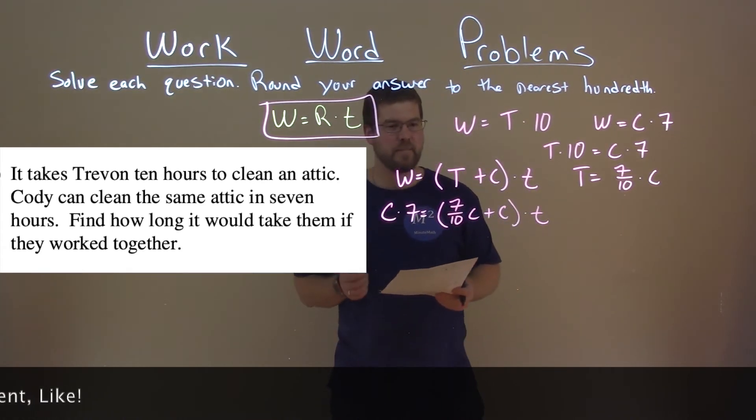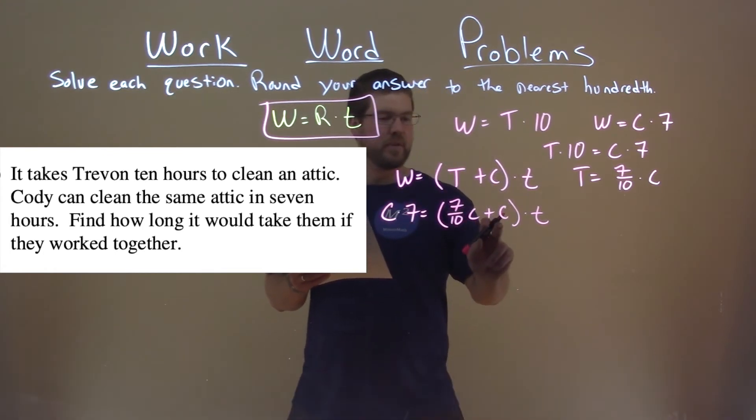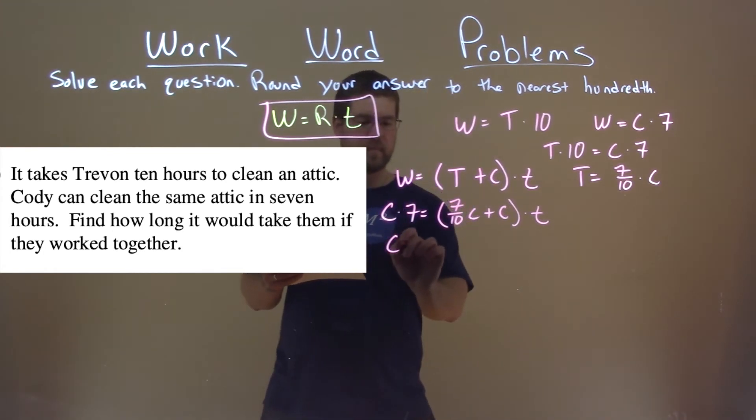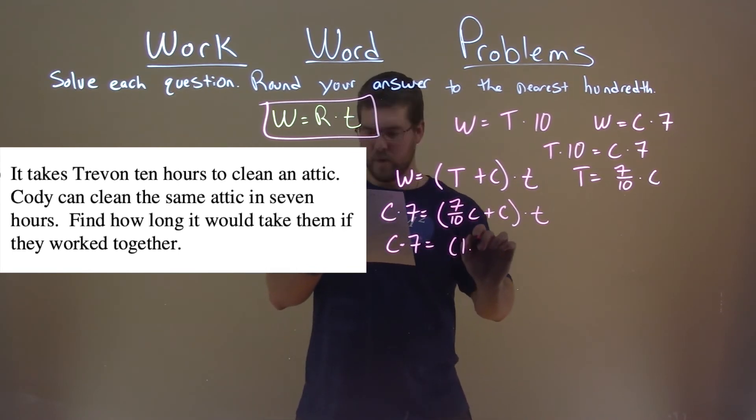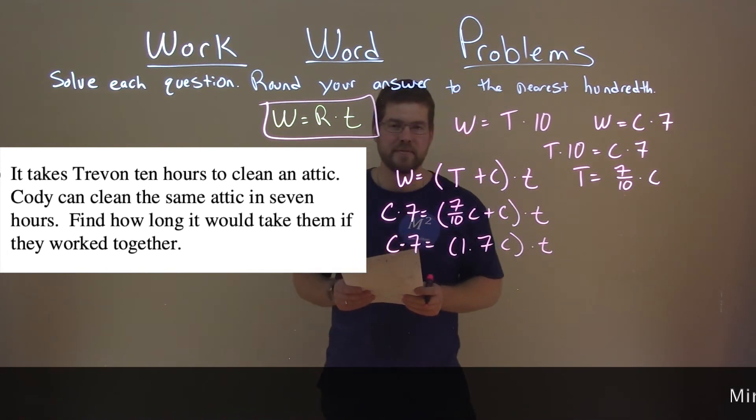And now we just have the variables seven tenths C plus C times little t. And now let's try to get T by itself. Seven tenths C plus one C is equal to 1.7 C times T for time.